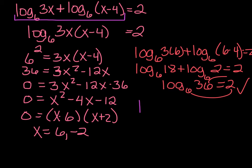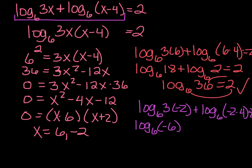Let's try the other one. Log base 6 of 3 times negative 2 plus log base 6 of negative 2 minus 4 equals 2. So I'm taking log base 6 of negative 6 plus log base 6 of negative 6 equals 2. Now can I take the logarithm of a negative number? And the answer is no, can't happen, can't happen.